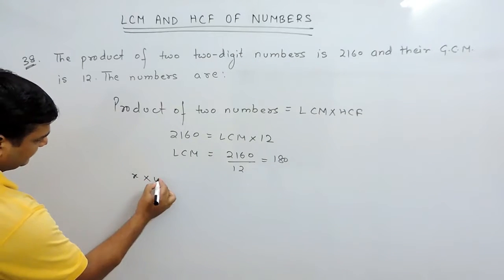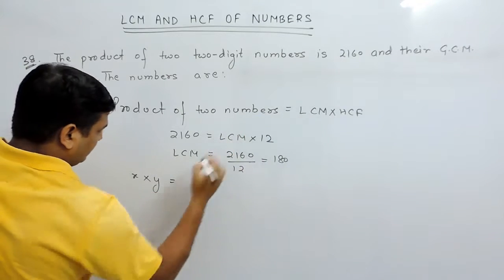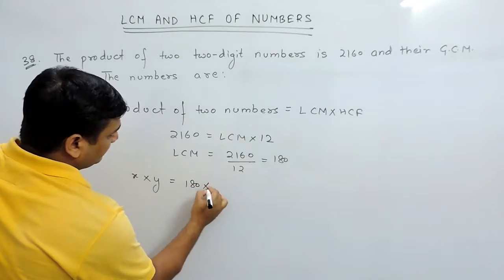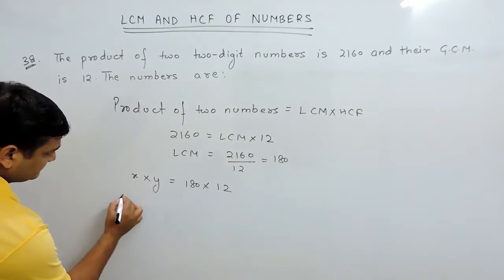Let's say the numbers are X and Y, and the LCM is 180 and HCF is 12. Well, HCF of the numbers always divides the numbers. Therefore, one of the factors of the number here is 12.